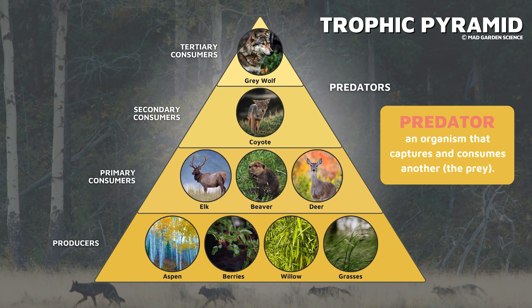Predators are at the top of the trophic pyramid. One of their roles in an ecosystem is to help control the populations of prey species. This directly and indirectly impacts plants, soils, and other animals farther along the food chain.